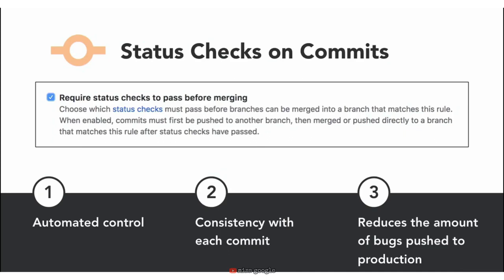CI, or continuous integration, helps automate this process and remove human error. Status checks are based on external processes such as continuous integration builds, which run for each push you make to a repository. You can see the pending, passing, or failing state of a status check next to the individual commits in your pull request. These status checks play an important role to our next topic — continuous integration and continuous delivery.